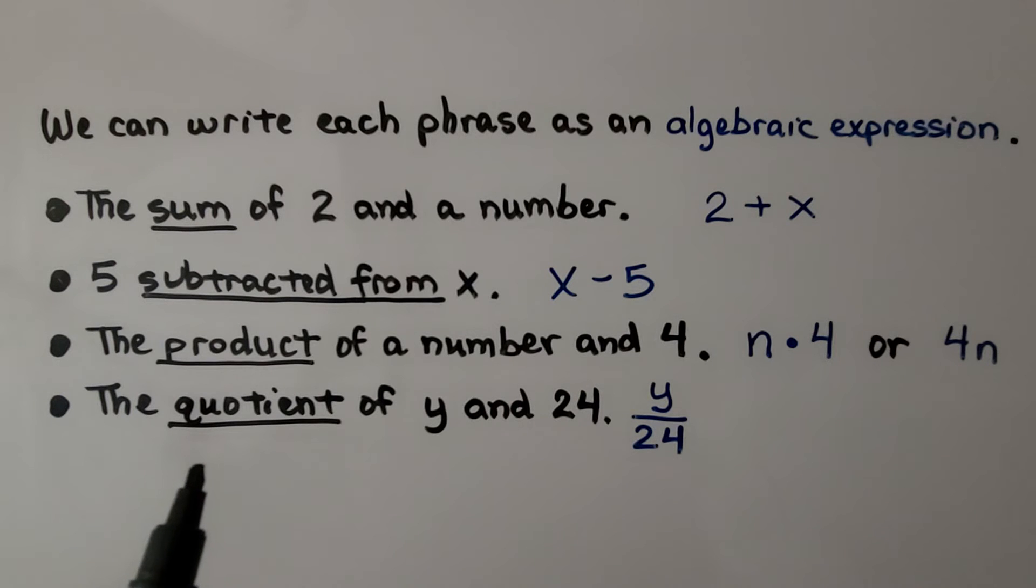If we see the quotient of y and 24, the y would be the numerator, and the 24 would be the denominator.